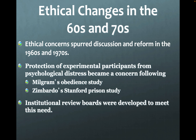Ethical concerns spurred discussion and reform in the 1960s and 1970s. Protection of experimental participants from psychological distress became a concern following Milgram's obedience study and Zimbardo's Stanford prison study — we'll talk about both of these later. Institutional review boards were developed to meet this need, because psychologists were doing some really strange things.